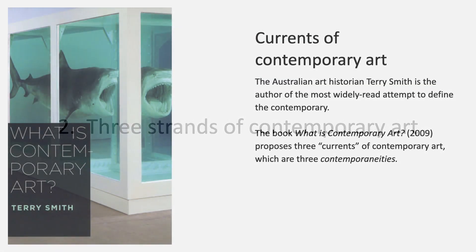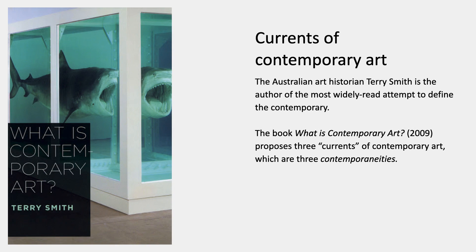These different temporalities of the stronger kind were around until the end of the 20th century and are vanishing, but they continue to exist in the present — something not acknowledged as much by the art world as it is by art historians, anthropologists, and others who travel outside art world circles. So, three strands of contemporary art. This is a theory proposed by the Australian art historian Terry Smith, also the author of probably the most widely read attempt to define the contemporary, mostly in his book What is Contemporary Art? from 2009. He uses the word contemporaneities to describe these currents or strands or modes of contemporary art.